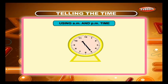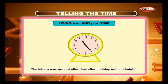The day is divided into two parts. Look at the time on this clock. If it is in the morning, we say the time is 25 minutes past 11 in the morning. The letters AM are put after time before midday, so we write it as 11:25 AM. If it is in the night, we say the time is 25 minutes past 11 at night. The letters PM are put after time after midday until midnight, so we write it as 11:25 PM.